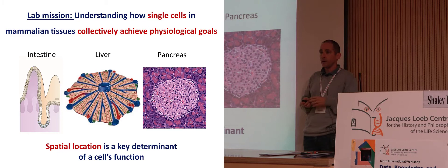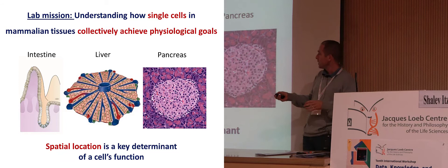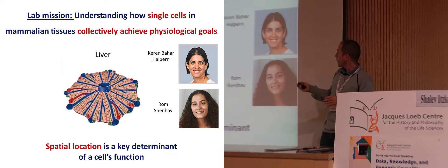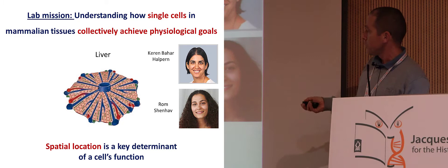In this talk, I'll tell you about two stereotypical examples of structured tissues: the liver, and in the second part, the gut — the intestine. The first part was done by my fabulous staff scientist Karen Bahar Halperin and an amazing bioinformatics student, Rom Shenhav. I'll tell you about the liver.